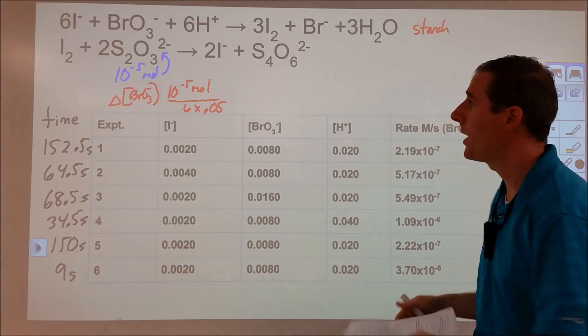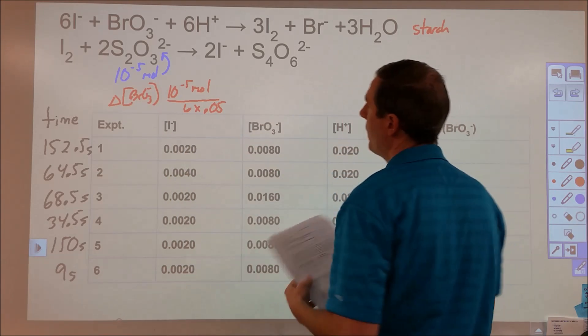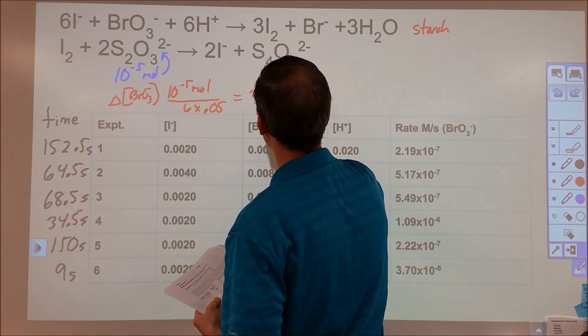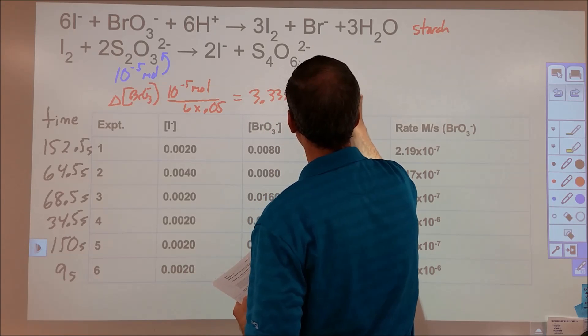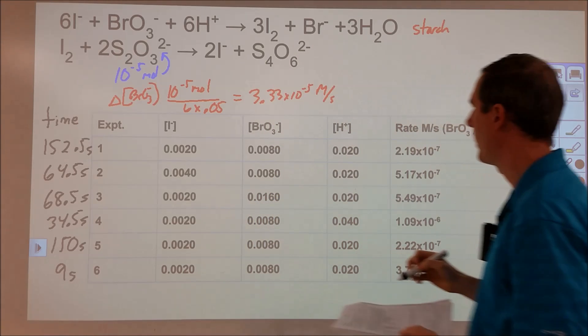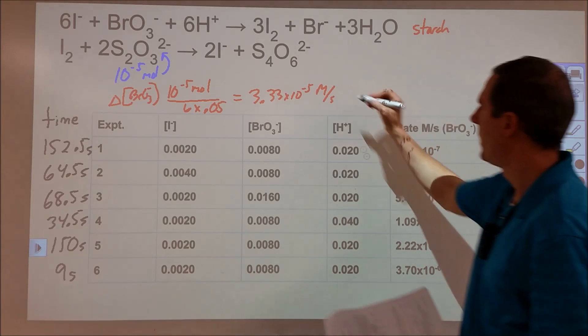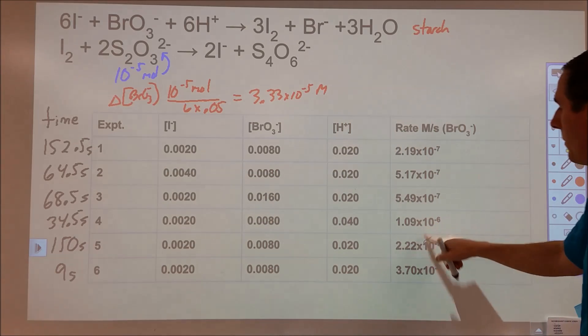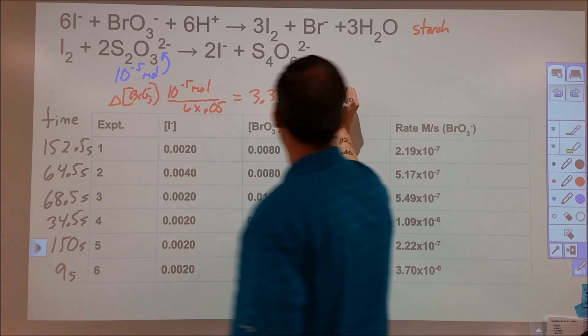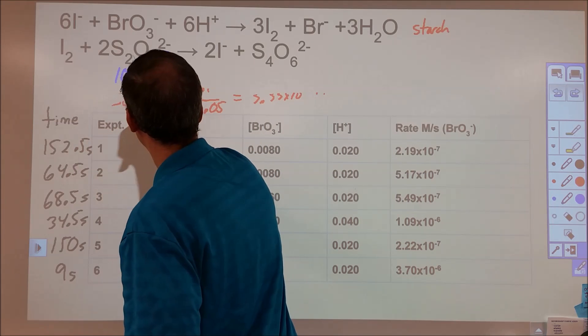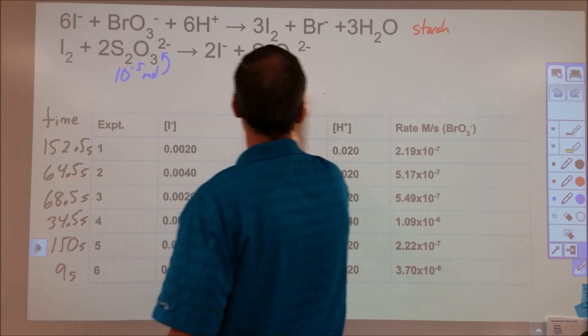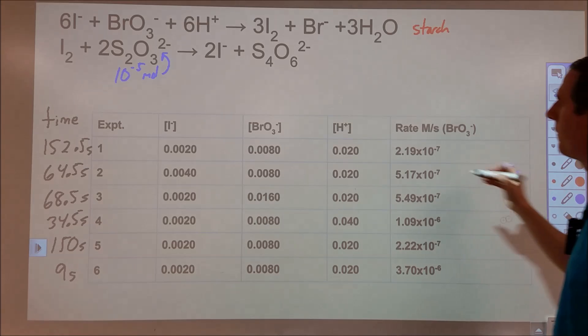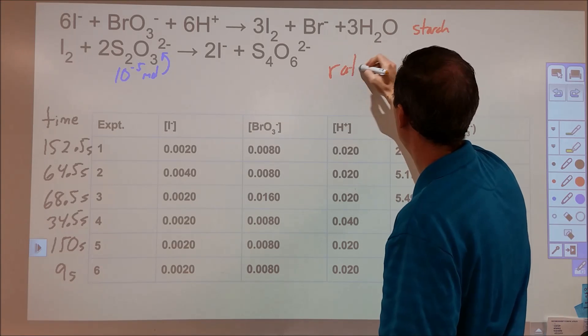And from that, we can figure out the rate. So 10 to the negative fifth over six times 0.05 turns out to be 3.33 times 10 to the negative fifth molarity. So if we take that, and we divide that by these seconds, that will give us the rates that I've obtained over here in the chart. So with that said, we've now got a chart that has six different experiments, two are temperature-based, and the other four are to figure out the rate law.